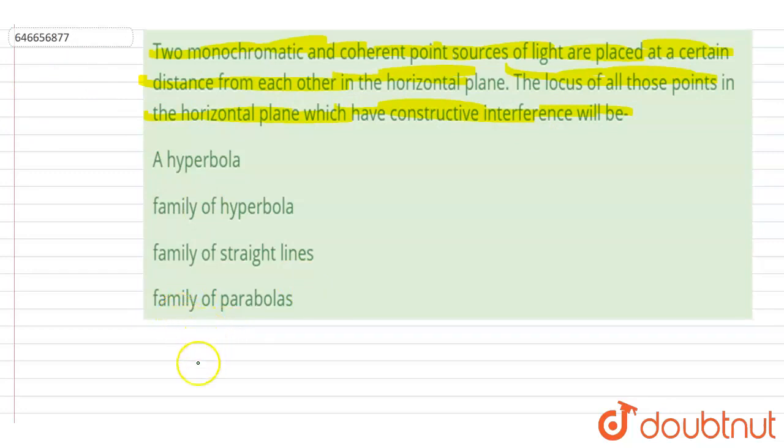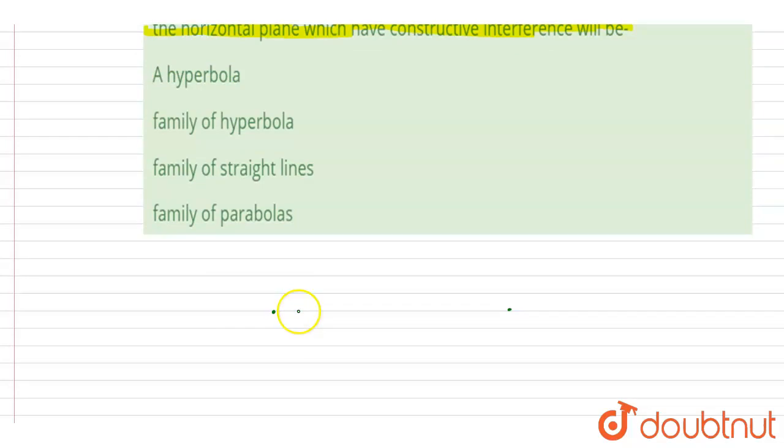interference, we know that the path difference should be integral multiple of lambda. So if I say here these are the two sources S1 and S2, we want the locus of all the points where the path difference is integral